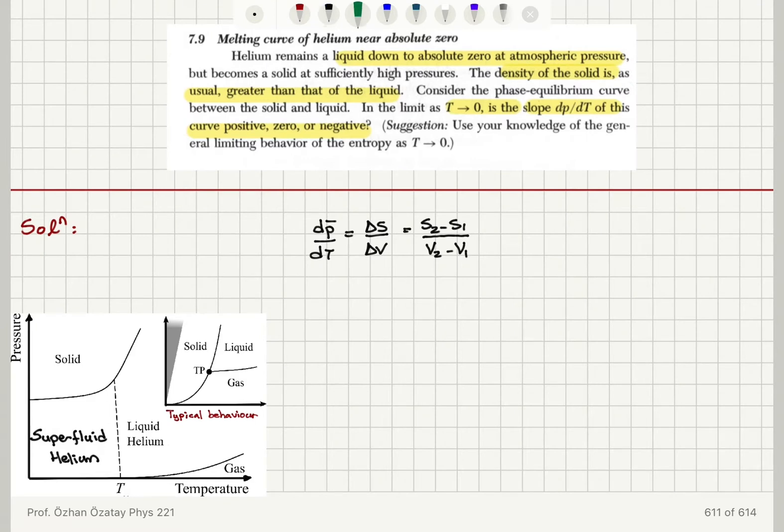Now we have the third law of thermodynamics. The third law tells us the behavior of entropy as T goes to zero. So this law states that as T goes to zero,